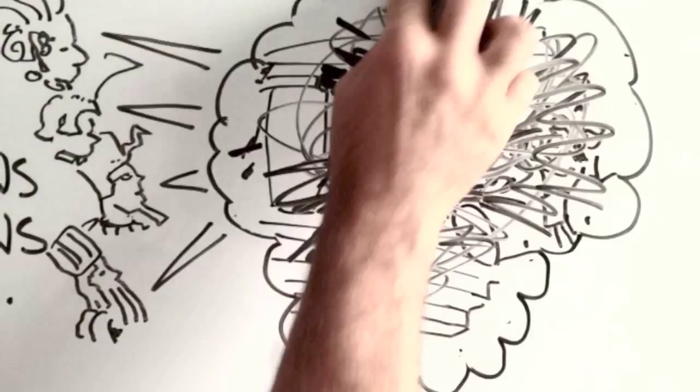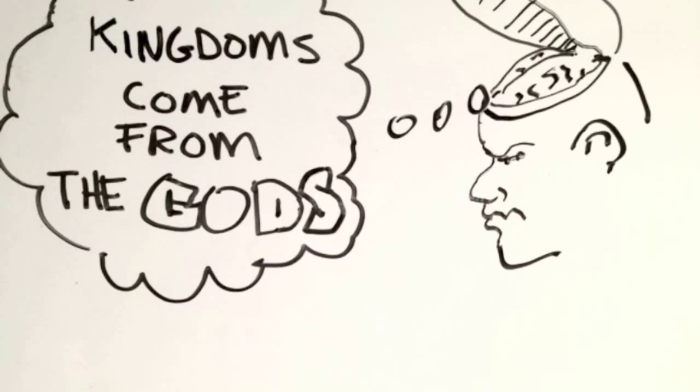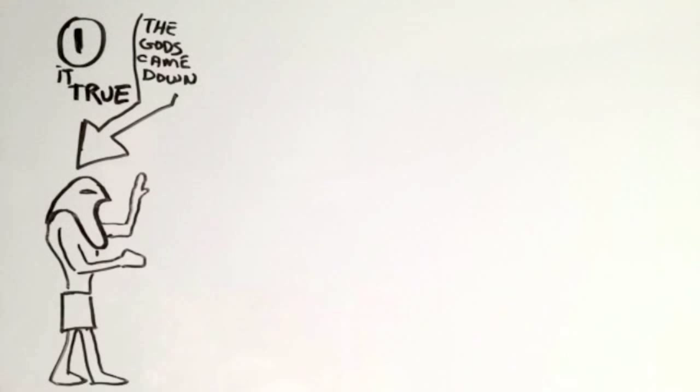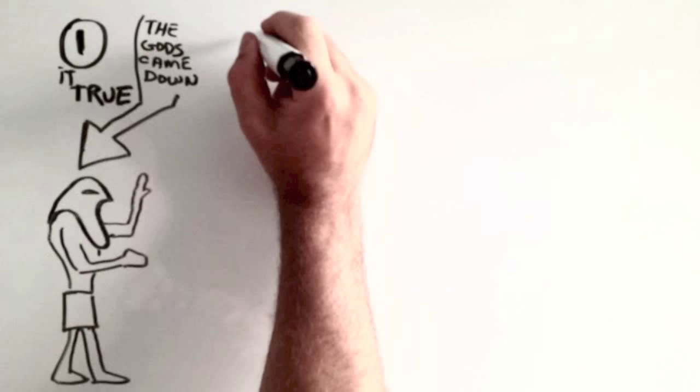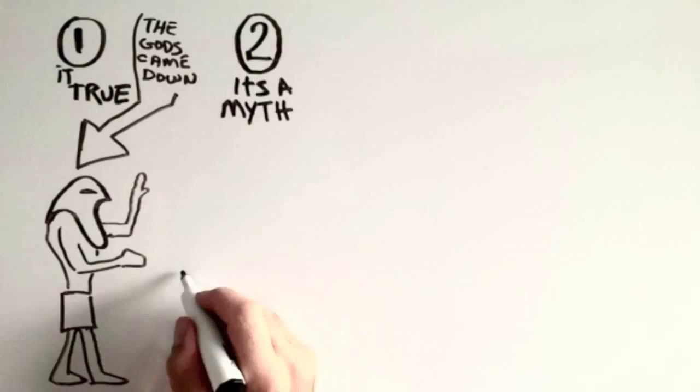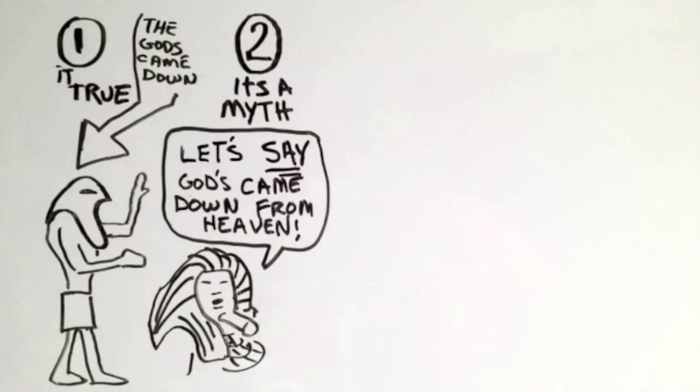All right, before we move any further, we need to address this theory. We need to get it clear in our mind's eye. It's going to be one of three things. Either it's true, and these gods really did come down from the heavens and set up these kingdoms. Or the people came up with this as a myth in order to understand something they didn't possibly understand. Or three, somebody was deceiving somebody in order to keep them ignorant.